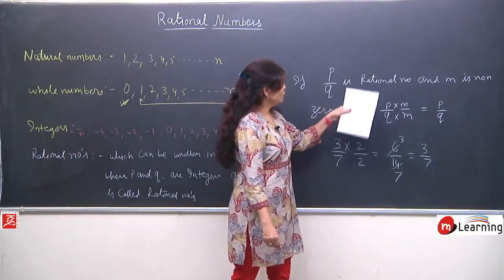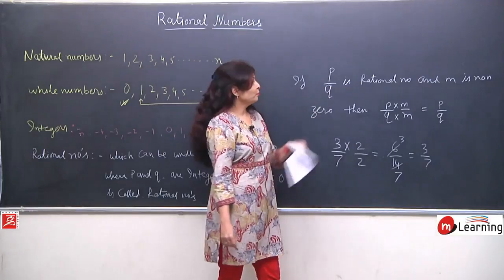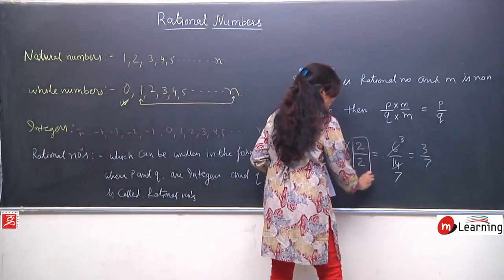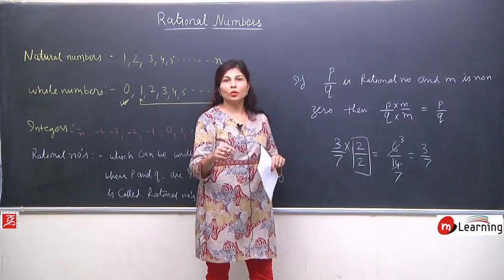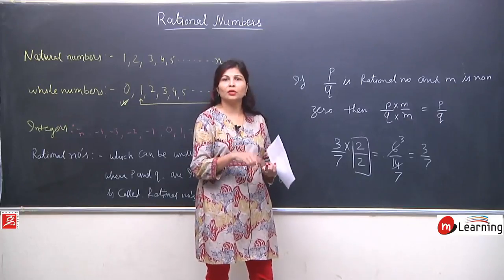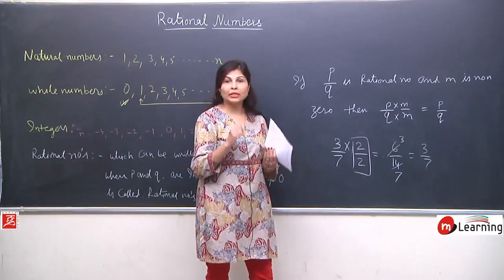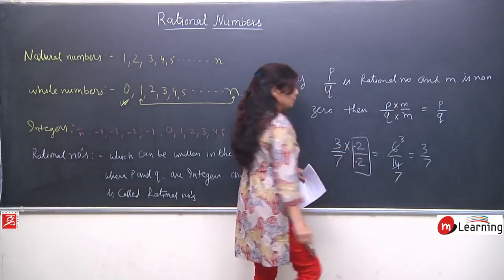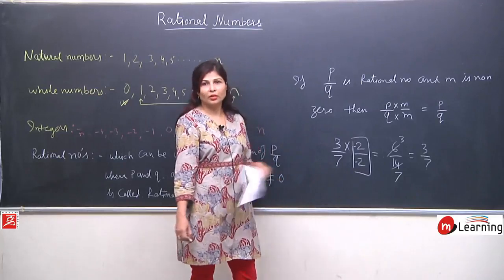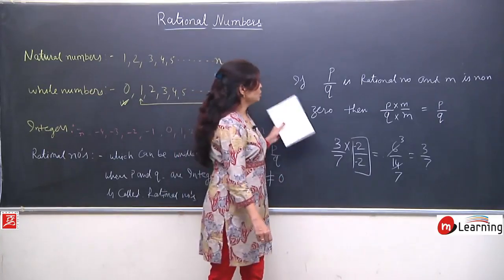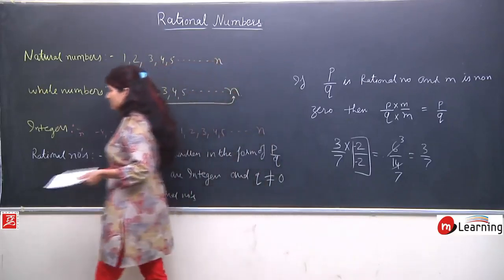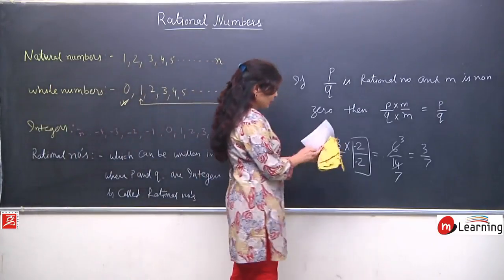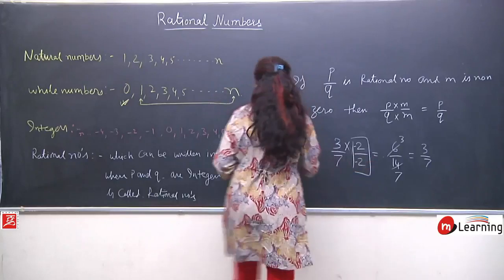So the property says: if p upon q is a rational number and m is a non-zero number, then multiplying m to both numerator and denominator leaves the number unchanged. For example, 3 upon 7 — if I multiply 2 to both numerator and denominator, I get 6 upon 14, and solving gives back 3 by 7. The condition is that the number m must be non-zero, and the same number must be used for both numerator and denominator.